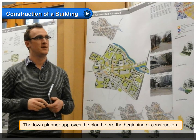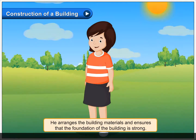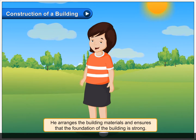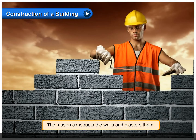The town planner approves the plan before the beginning of construction. The civil engineer then begins working for the building. He supervises the contractor and his team of workers. He arranges the building materials and ensures that the foundation of the building is strong. The mason constructs the walls and plasters them.